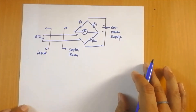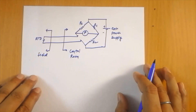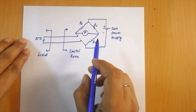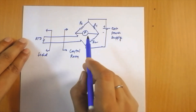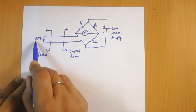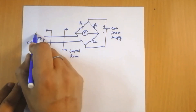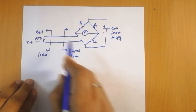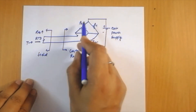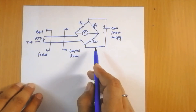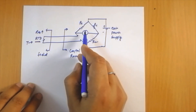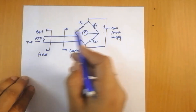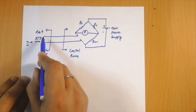Initially, when no temperature is applied to the RTD, the bridge is in balanced condition and there is null deflection in the galvanometer. Whenever temperature is applied to the RTD, the resistance changes — it increases with temperature in the case of a conductor. This changes the balanced condition of the bridge, resulting in deflection in the galvanometer. We can calibrate this meter to directly measure the temperature change that causes the change in resistance.